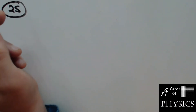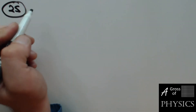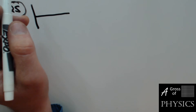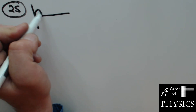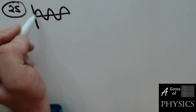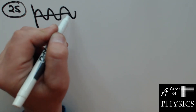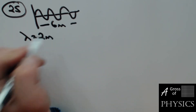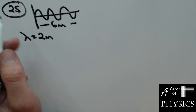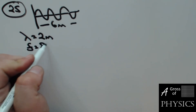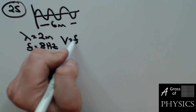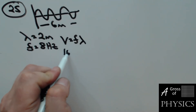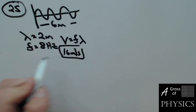Number 25: we have a diagram with a number of waveforms — one, two, three. So there are three waves in six meters, meaning the wavelength is two meters. The frequency is given as 8 hertz. What's the speed? V equals F times lambda: 8 times 2 is 16 meters per second. Choice two.